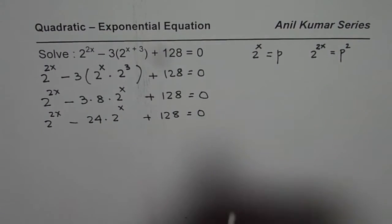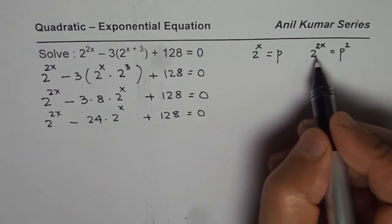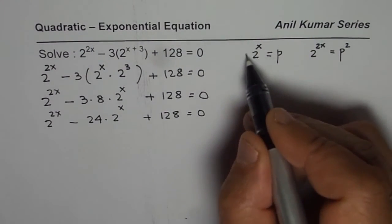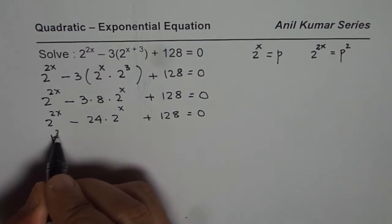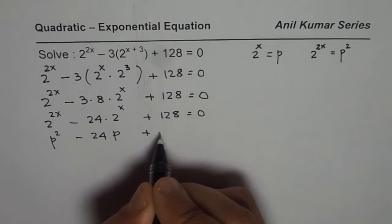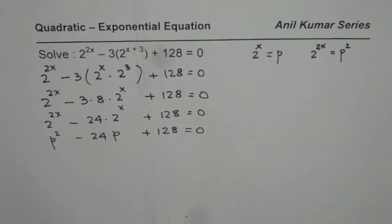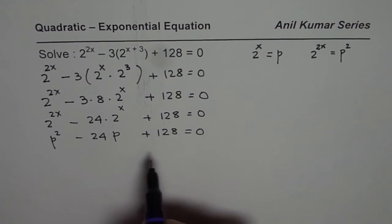Now we will do the substitution which we talked about. Let 2 to the power of x equal p, so we get p squared minus 24p plus 128 equals to 0. So that is the quadratic equation I was talking about. Once we have a quadratic equation we can easily factor.